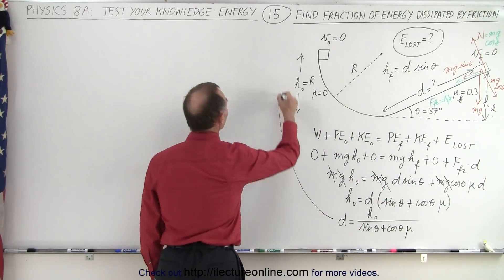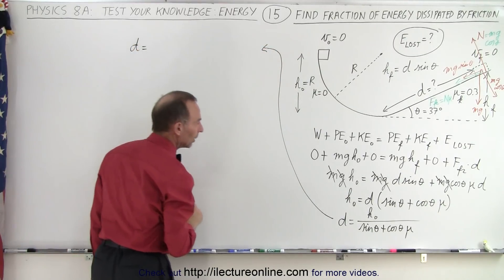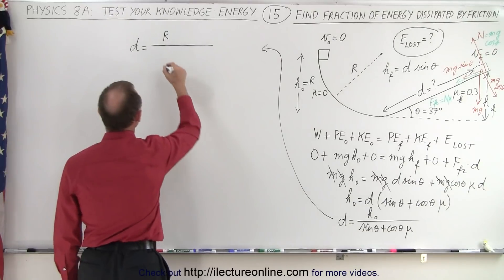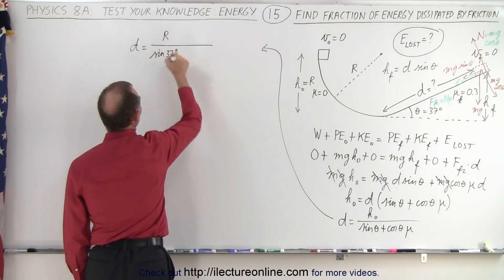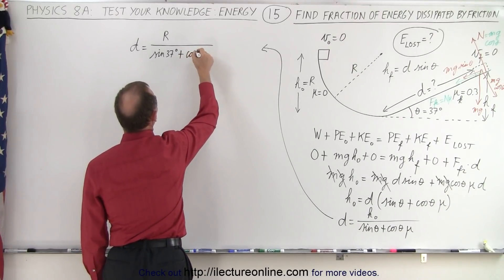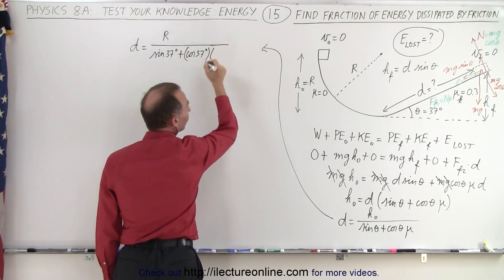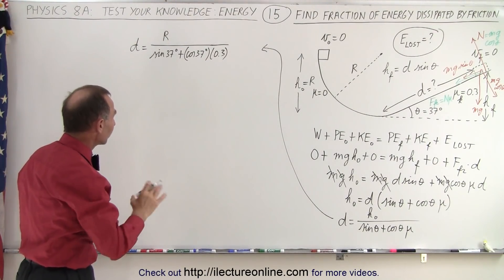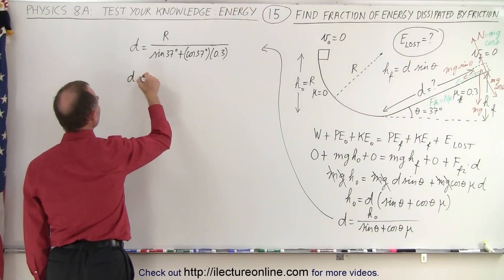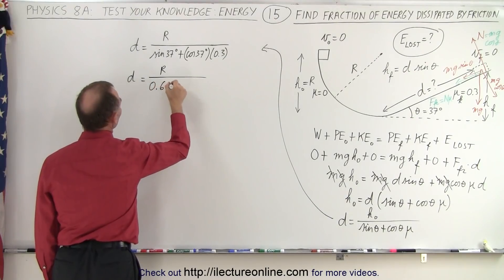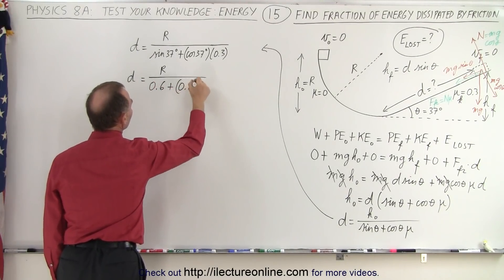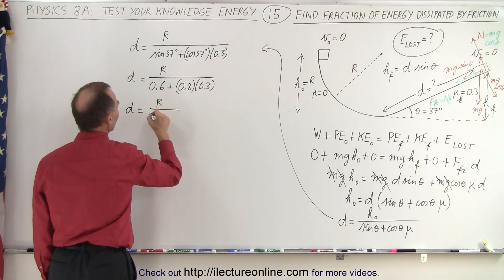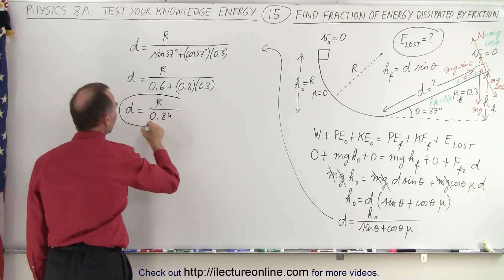Now we plug in the numbers to find d. So d equals the initial height r divided by sin(37°) plus cos(37°) times mu, where mu equals 0.3. The sine of 37° is approximately 0.6 and the cosine of 37° is approximately 0.8. So d equals r divided by (0.6 + 0.8 × 0.3), which gives us 0.6 + 0.24 = 0.84. Therefore d equals r divided by 0.84.